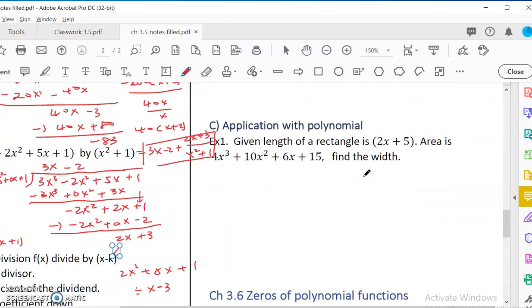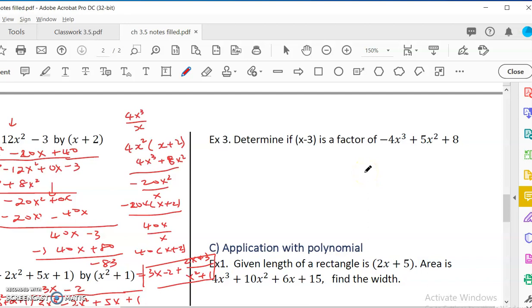More examples. So now if something divides and you have 0 as a remainder, that means it's a factor. Just like how do I know 3 is a factor of 18? Because 18 divided by 3 is equal to 6, and the remainder is 0. So 3 is a factor. So the same here. If I divide something and I have a remainder of 0, that means x minus 3 is a factor. So to do it, we use synthetic division. So we'll try to divide -4x³ + 5x² + 0x + 8, you divide it by x minus 3 to see if the remainder is 0 or not.